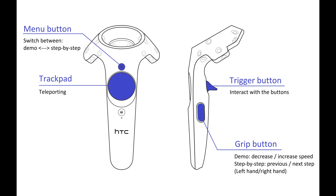The following buttons on the controller can be used. The Menu button pauses the demo and enables step-by-step, and vice versa. The Trackpad can be used to teleport yourself to a better position. The Trigger button interacts with buttons on the sorting table.